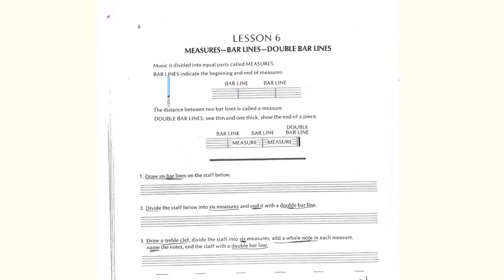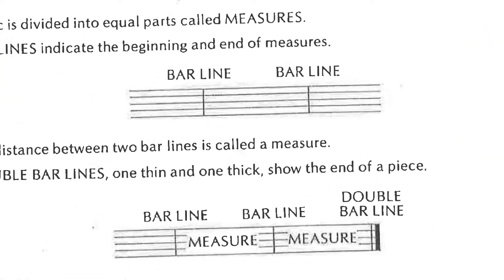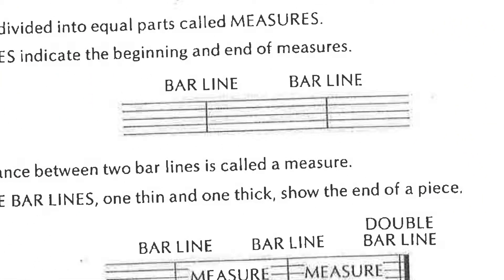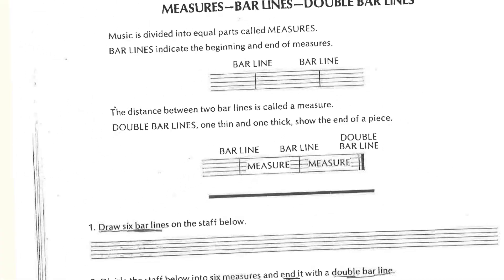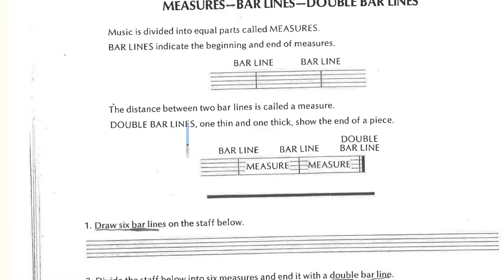Bar lines indicate the beginning and end of measures. Here's the five-line, four-space staff, and to divide it into measures you use bar lines. The bar lines go from the top line to the bottom line — they don't go above or below. The distance between two bar lines is called a measure.